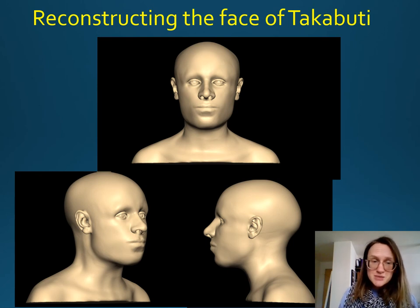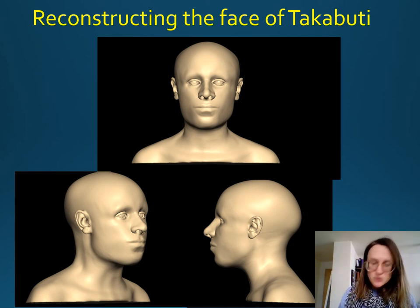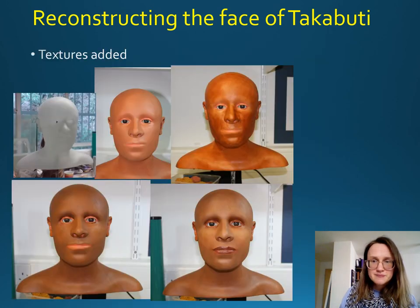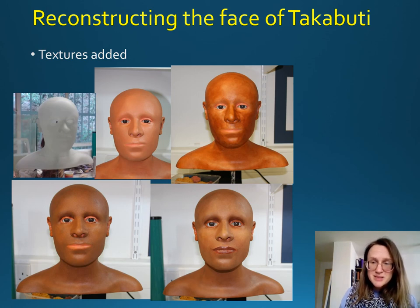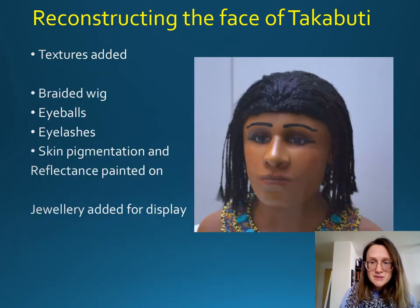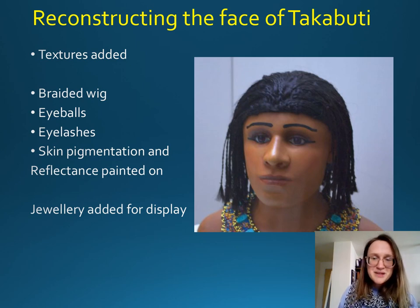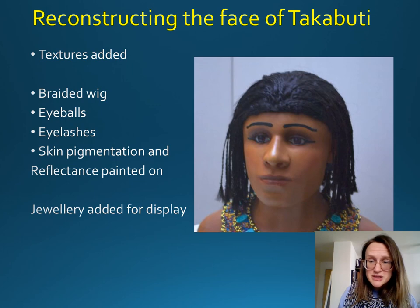In Takabuti's case, we were asked by the research team to produce a 3D printed model for display at the Ulster Museum. We take the 3D model from Freeform and export it to a 3D printing company. The image on the top left shows what the 3D printed model looks like in its original state. Onto that, we add very thin, transparent layers of paint to build up a translucent skin layer, then add plastic eyeballs and even false eyelashes. For Takabuti, we were asked to add a braided wig and some makeup to show how she might have looked in life, and that 3D printed model is on display at the Ulster Museum.